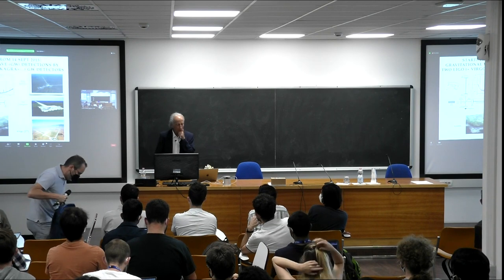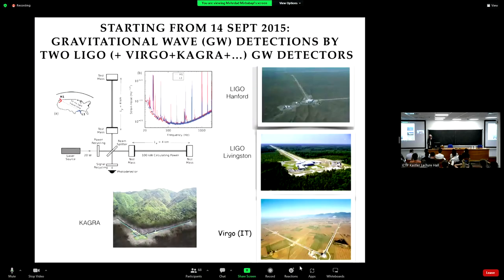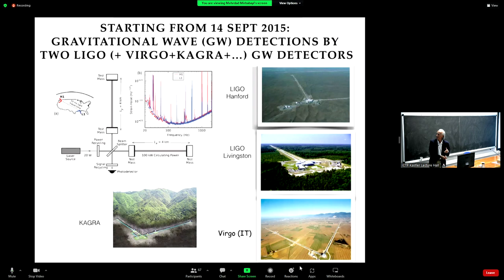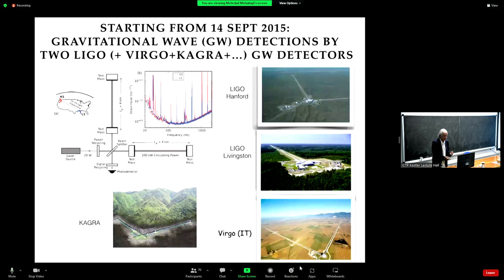Starting on the 14th of September 2015, the ground-based network of interferometric gravitational wave detectors — at the time only the two LIGO interferometers, as Virgo was not working — detected the first gravitational wave signals. Now the network comprises two LIGO detectors, Virgo (the French-Italian detector near Pisa), the Japanese detector KAGRA, and soon the LIGO-India detector.